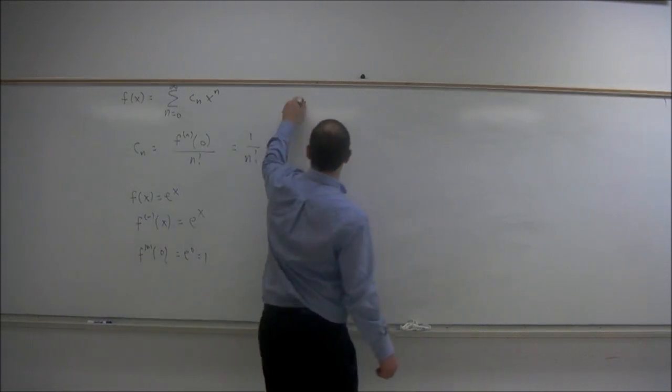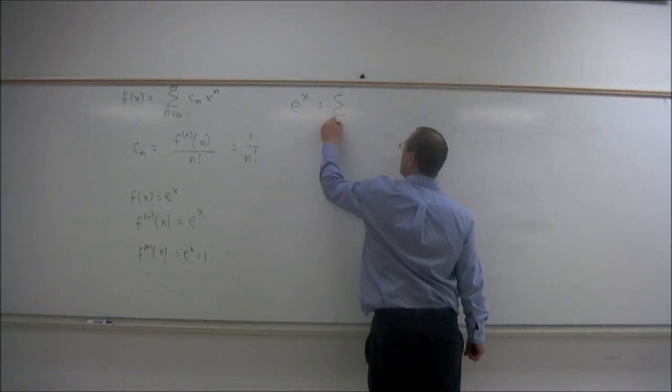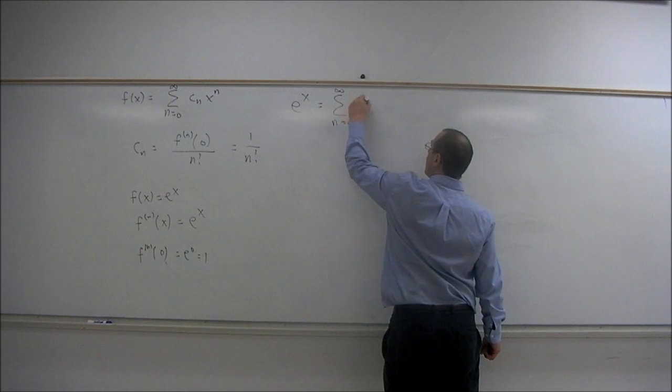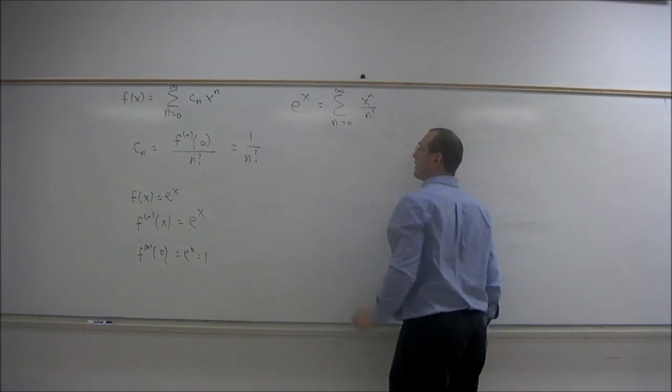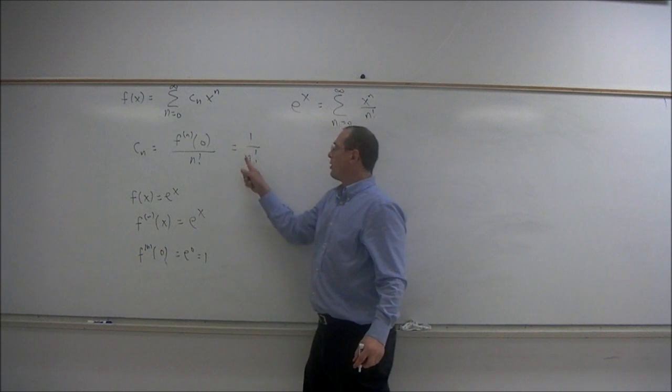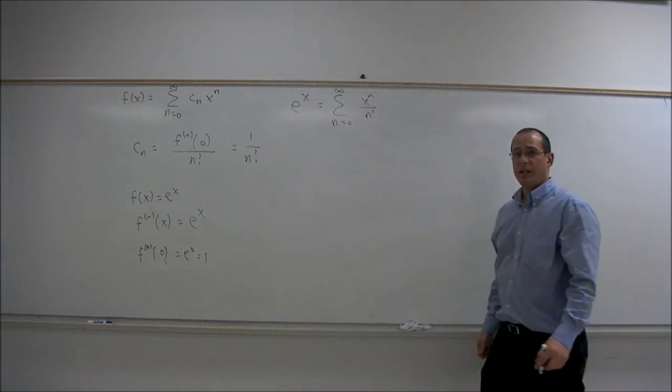So we quickly get e^x is the summation n equals zero to infinity of x^n over n factorial. Our coefficients being one over n factorial.